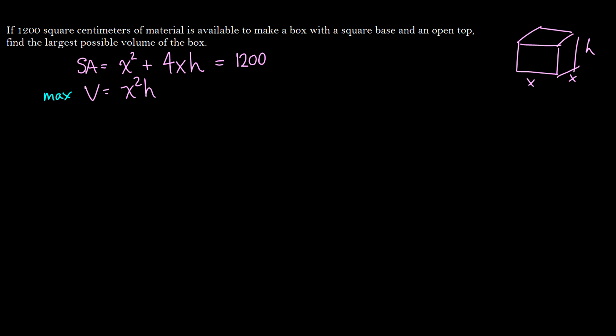So we can solve for h here. We know that h is going to be equal to 1,200 minus x squared, all divided by 4 times x, which we can simplify further and write this as 300 over x minus x over 4. So we have our height here.